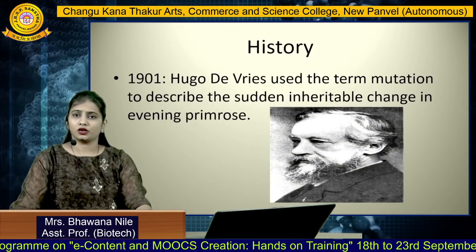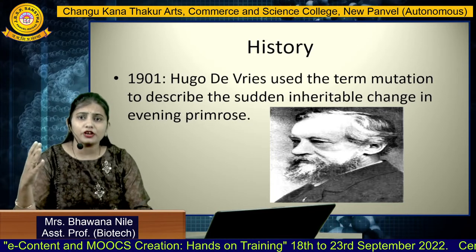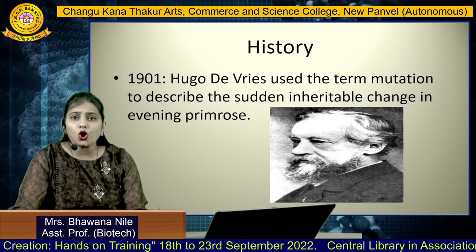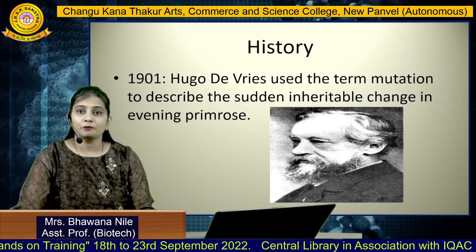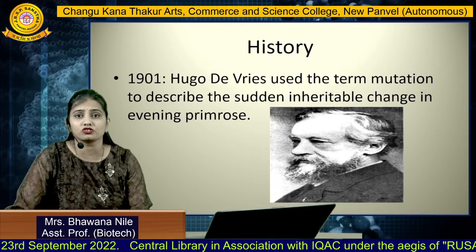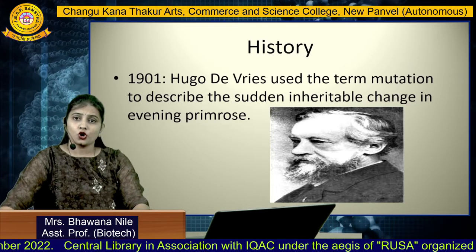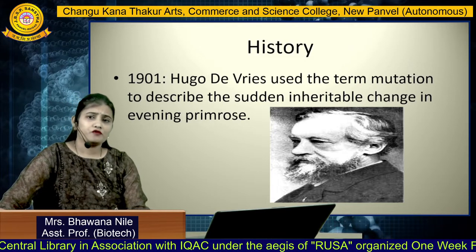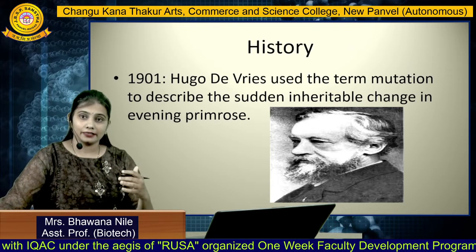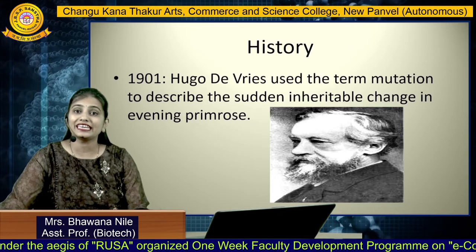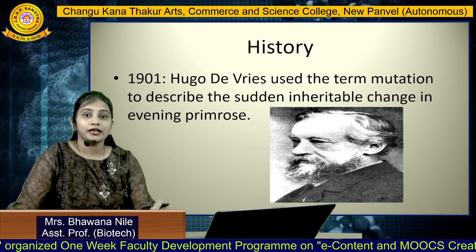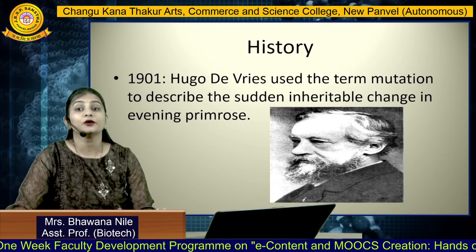Coming to the history, the driving force of mutation research: in 1901, it was Hugo de Vries who used the term mutation to describe the sudden inheritable change in evening primrose. He actually coined the term mutation. He found a morphological change in the flower color while studying genetic experiments on evening primrose, and he coined it beautifully as a sudden inheritable change.